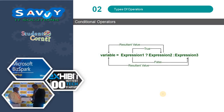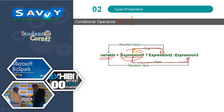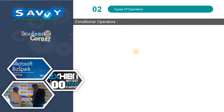Conditional operators use '?' and ':'. If expression 1 is true, then expression 2 will be executed. If expression 1 is false, then expression 3 will be executed. It is similar to the if-else statement in control structures. Now I will take a few examples and explain.